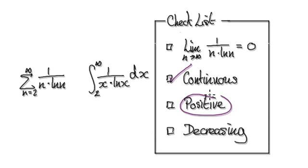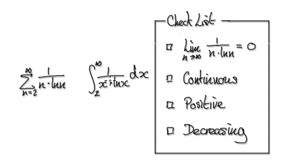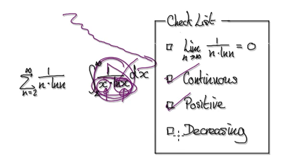Is it going to be positive all the time from 2 to infinity? Yes, this is going to be positive. Is it going to decrease all the time? Yes, because the denominator just keeps getting bigger and bigger. When you have 1 divided by something that keeps growing, the whole thing gets smaller and smaller. So it will be continuous, positive, and always decreasing.